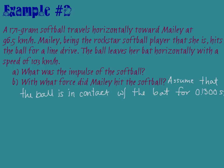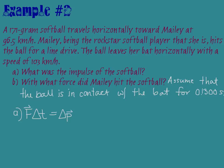In this second problem, we have Mailey hitting a softball. It's a 171 gram softball that is coming toward her at 96.5 kilometers per hour. Mailey, being a rockstar softball player, hits the ball for a line drive, and the ball leaves her bat horizontally with a speed of 103 kilometers per hour. In Part A, we're asked to find the impulse of the softball. We know that impulse is defined as force times time, and we also know this is equal to the change in momentum. We don't know force or time yet, so we're going to find the change in momentum to find the impulse.